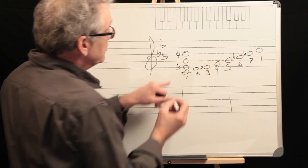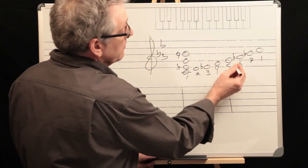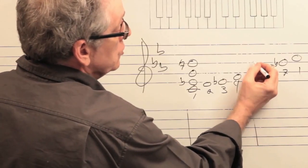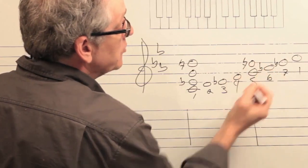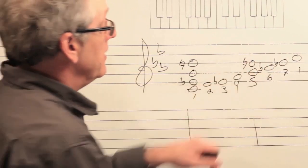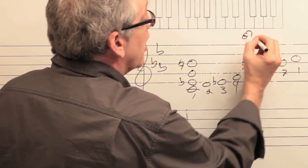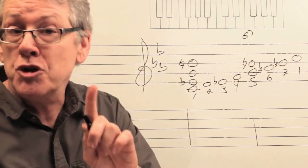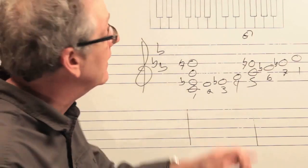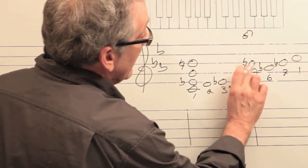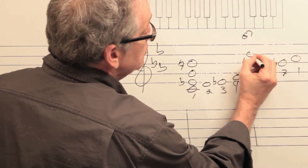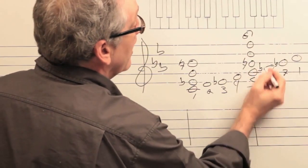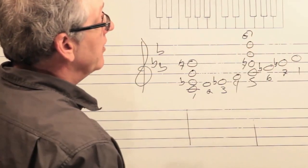The five chord in minor is G7 — again with B natural, because it needs a major third. So the five chord is G, B natural, D, and F. That's G7.